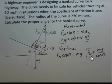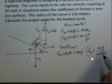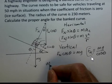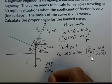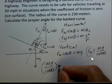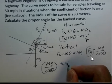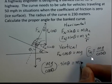So where Fn appeared, I'm going to put in mg over cosine theta. I still have times sine theta equals m V squared over R.